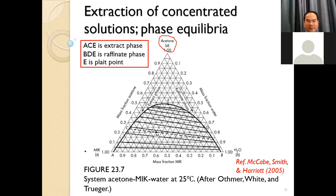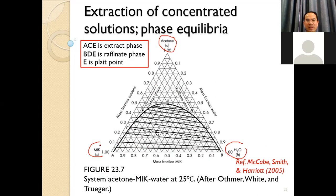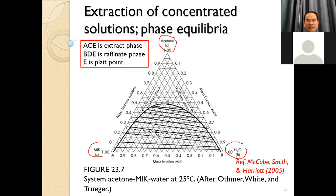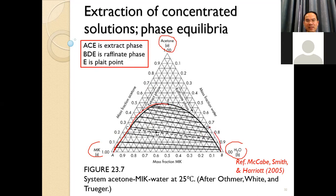The three components are acetone, MIK, and water. Water is the solvent carrier, and we use MIK to extract acetone from water. This is the triangular diagram. The equilibrium position line divides the diagram, where ACE represents the extract phase containing MIK, and BDE represents the raffinate phase — the phase that includes water and some acetone.